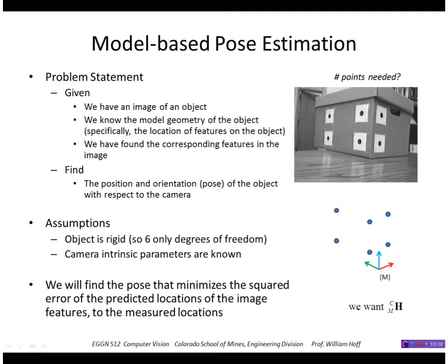Given a hypothesis for the pose of the object, we project those feature points to the image and then look at the error between those projected points and the image points. If we find the correct pose, we should have very low error. How many points do we need? Well, there are six parameters in the pose, and each point contributes two equations representing the x and y image coordinates, so we need a minimum of three points.